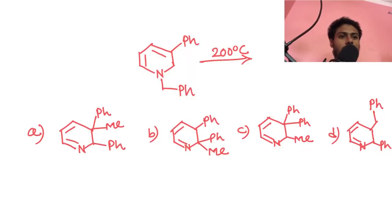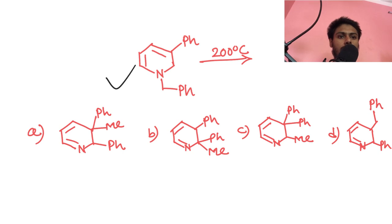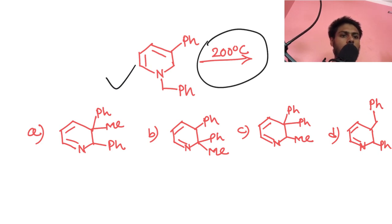Hey friends, welcome to Chemistry Lover. Today I'm going to solve this question for you. We have this particular compound and it is heated at 200 degrees centigrade. You have to predict the correct answer from the four options given. This question is very interesting.